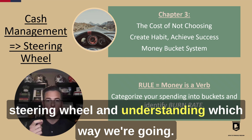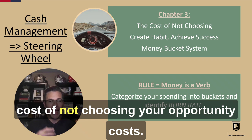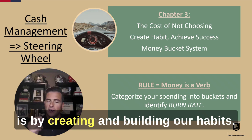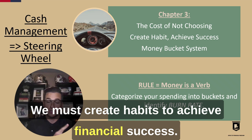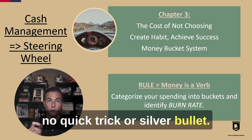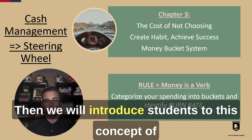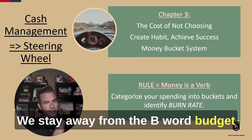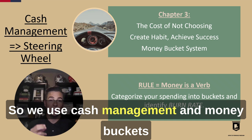This is going to be measuring the cost of not choosing — your opportunity costs. How we're going to consistently find success is by creating and building our habits. That is unparalleled, unprecedented. We must create habits to achieve financial success. There is no short term, no quick trick or silver bullet — you have to build your habits to find success. Then we will introduce students to this concept of a cash management system, the money bucket system. We stay away from the word 'budget' because students have a negative connotation there, so we use cash management and money buckets.